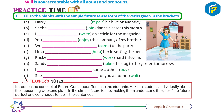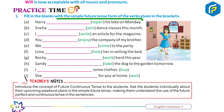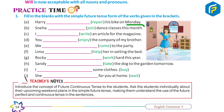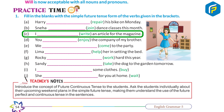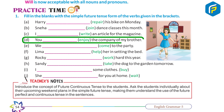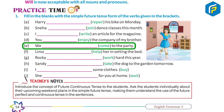Practice Time 1: Fill in the blanks with the simple future tense form of the verbs given in brackets. A. Harry will repair his bike on Monday. B. Sneha will join dance classes this month. C. I will write an article for the magazine. D. You will enjoy the company of my brother. E. We will come to the party.